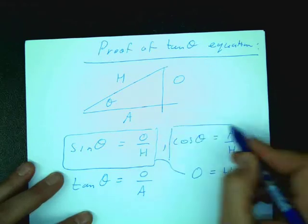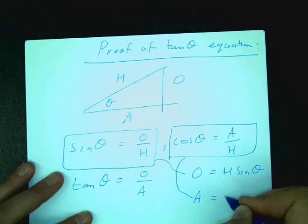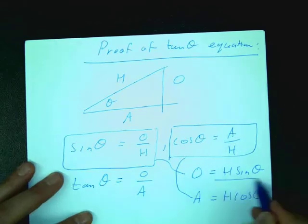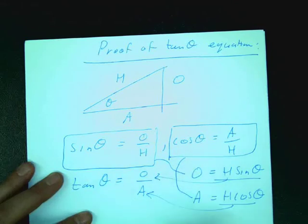And if I take the cosine equation and I want to get A by itself, A equals... and then I substitute that into there, and that into there. I'm going to get h, what? h sine theta. h cos theta. And what do you reckon happens?